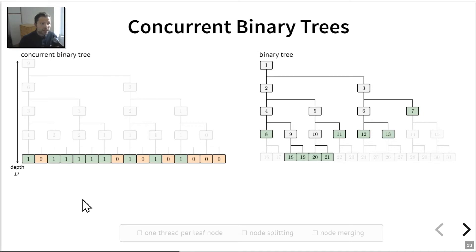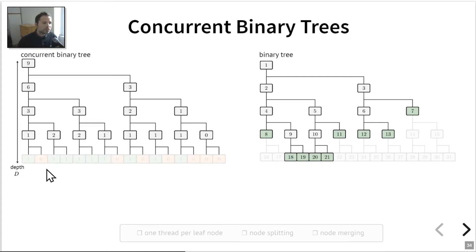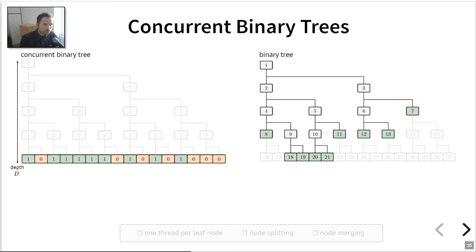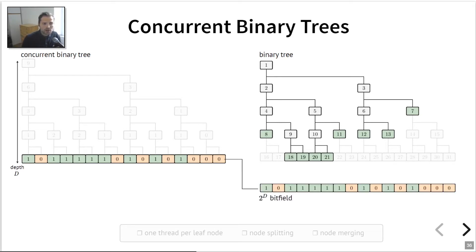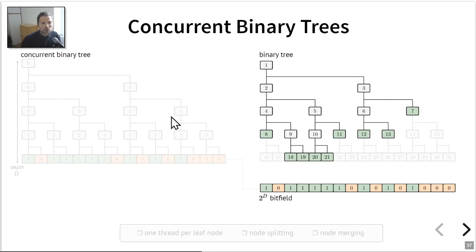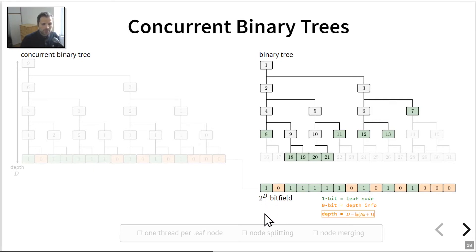A concurrent binary tree has two components: the first is a bit field which stores only binary values — ones or zeros — and the rest of the tree is what I call a sum reduction tree, which encodes positive integers. Starting with the bit field: it encodes most of the actual binary tree. I observed that any binary tree can be encoded using this simple bit field, where each bit set to one denotes a leaf node, and each bit set to zero provides information regarding the depth of the actual leaf node.